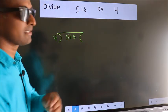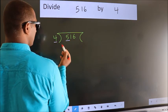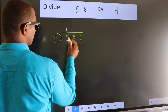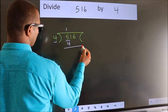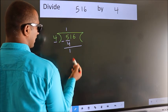Next. Here we have 5, here 4. A number close to 5 in the 4 table is 4 once 4. Now we should subtract. We get 1.